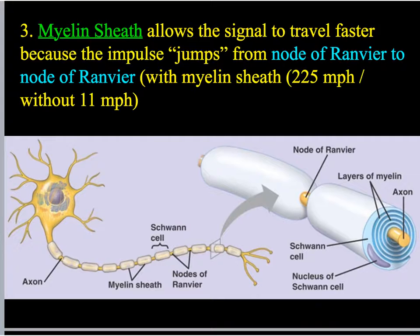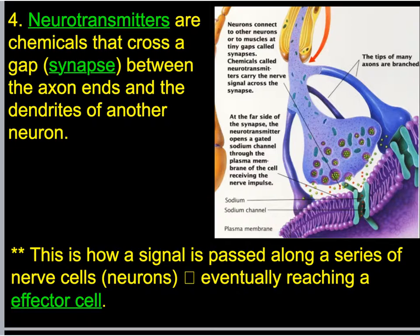When I think from my brain to snap my fingers, that signal travels at 225 miles per hour — over maybe three or four feet, so it's essentially instantaneous. Without myelin sheath it's much slower. MS — multiple sclerosis — is an autoimmune disease where the myelin sheath is actually destroyed because the immune system starts destroying the cells that produce it. It's a slow degenerative disease where the nervous system essentially stops functioning properly because the person can't send signals quickly enough.